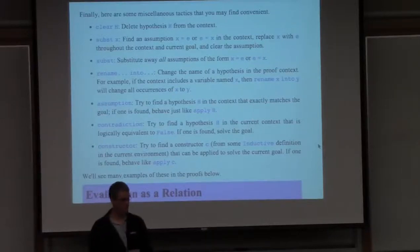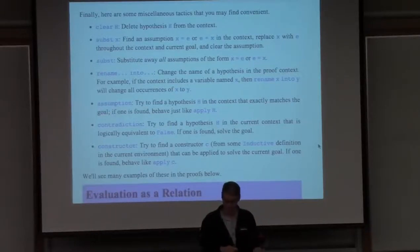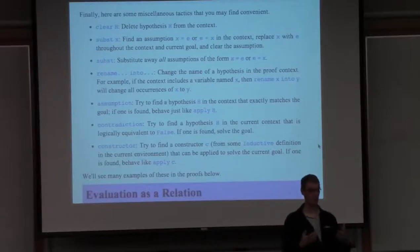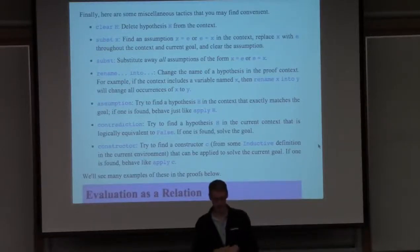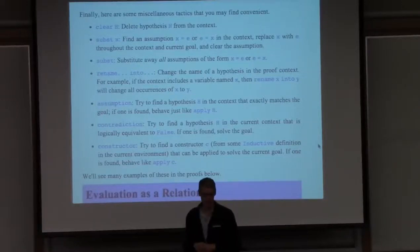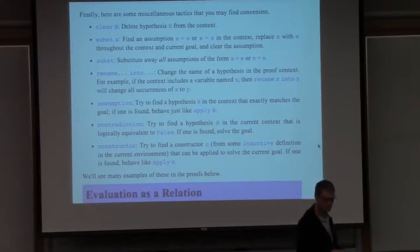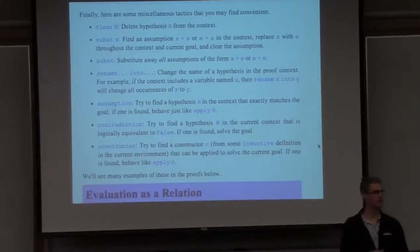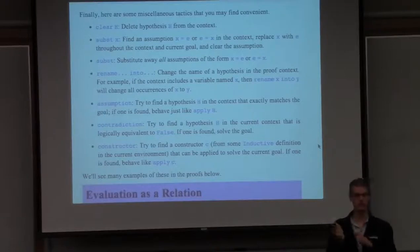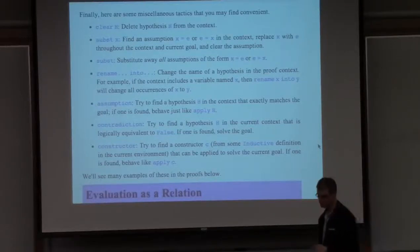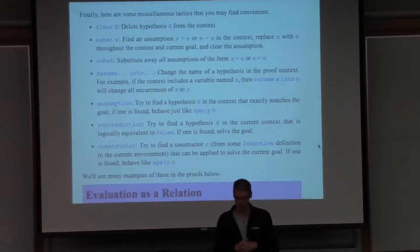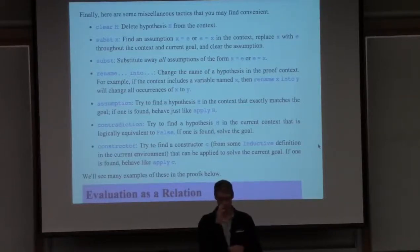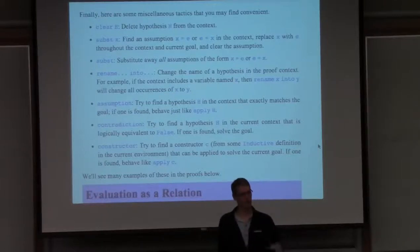Assumption is a tactic that looks in the local hypotheses for something that can be applied to solve the goal. Contradiction is similar - it looks in the local hypotheses for something contradictory, something equivalent to false, and solves the goal if so. Constructor is a simple one that looks around in all currently available inductive definitions and sees if there's some constructor that can be applied at this point.